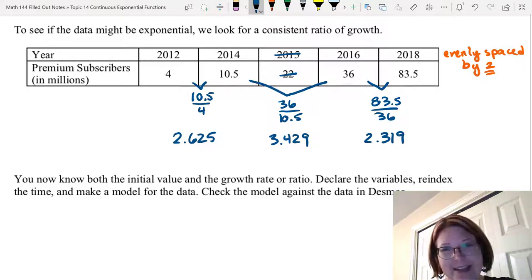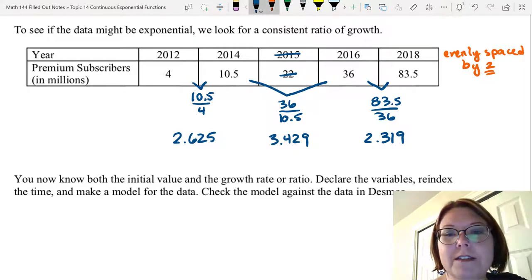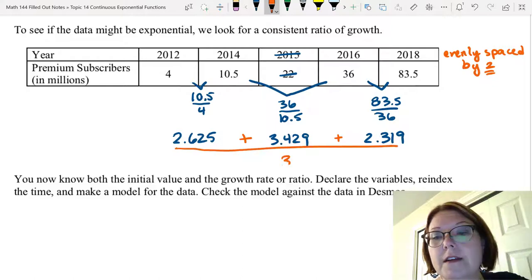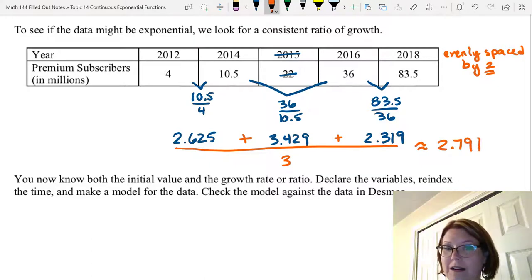And the last pair is 83.5 divided by 36, and that one is 2.319. While these are not perfectly the same, they are much, much closer together than what we saw in the test for linearity that we did. We can calculate an average for these three values. So 2.625 plus 3.429 plus 2.319 all divided by 3 to give us an average of 2.791. There's our growth factor.